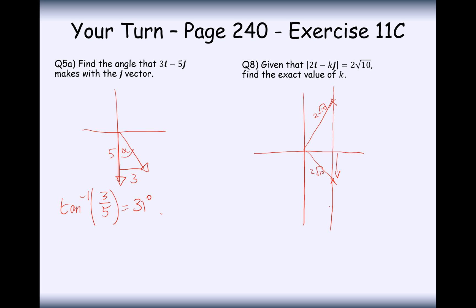What we don't know therefore is how far down or how far up this k value is here. The first thing we have to do then is, if this is a 2, then what we're going to do next is a little bit of Pythagoras' theorem on this triangle here.